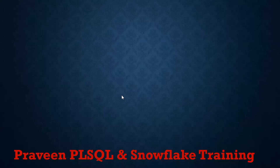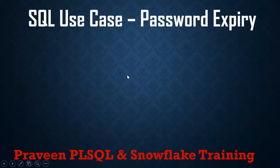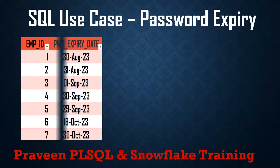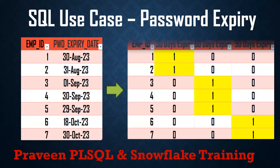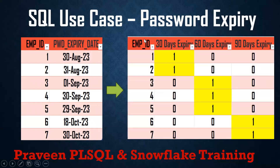Hello, welcome back to my YouTube channel, Praveen Kumar. Today we'll see one of the SQL real-time issues: password expiry. I have one table with employee and password expiration - it has seven records. You need to write a query to display employees whose password is going to expire within 30 days, within 60 days, and within 90 days.